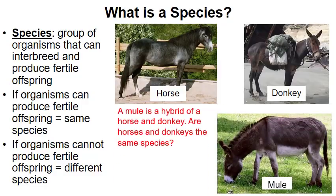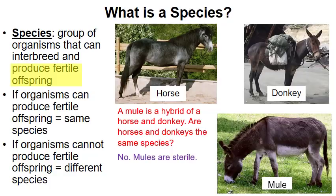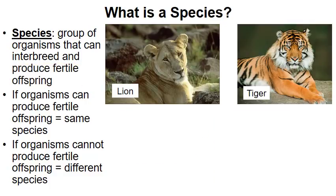Are donkeys and horses members of the same species? It would be reasonable to say yes, but actually they're not. Remember, the definition of a species is not just whether two individuals can make a baby with one another, but whether the offspring can then reproduce itself with other members. Mules are sterile — a male mule and a female mule cannot reproduce with one another — and for this reason horses and donkeys are members of different species.